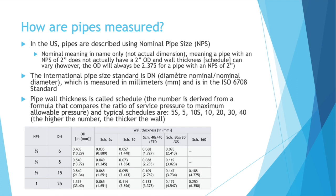Pipe wall thickness is called schedule, and that number is derived from a formula that compares the ratio of service pressure — when the pipe is normally in service — to maximum allowable pressure, a pressure that shouldn't be exceeded in the pipe. Common schedules are 5, 10, 20, 30, 40, and 80. Schedule 40 seems to be the standard that you order for pipe unless you specify otherwise.